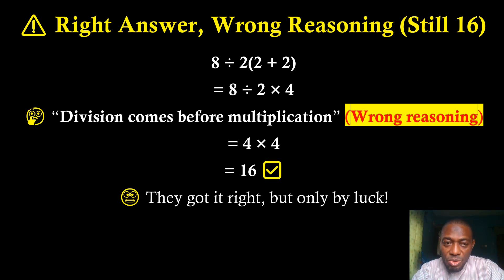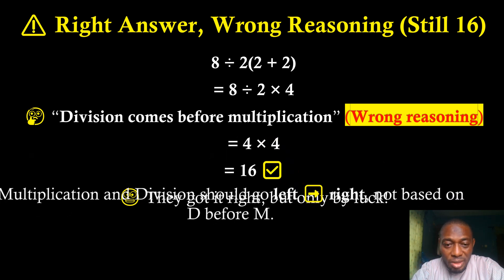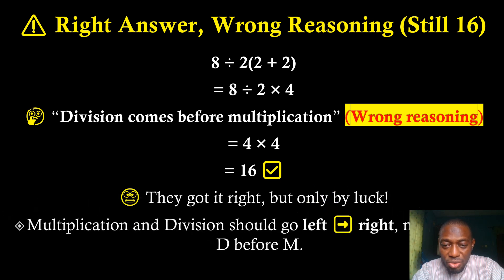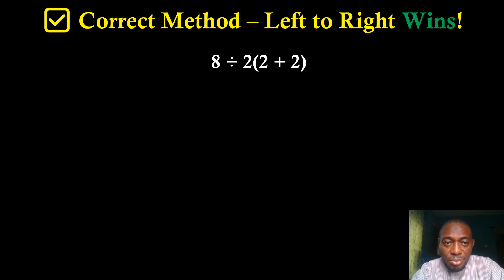The rule states that we do division and multiplication from left to right — not because division comes first. Multiplication and division should be handled left to right, not because division takes priority over multiplication.